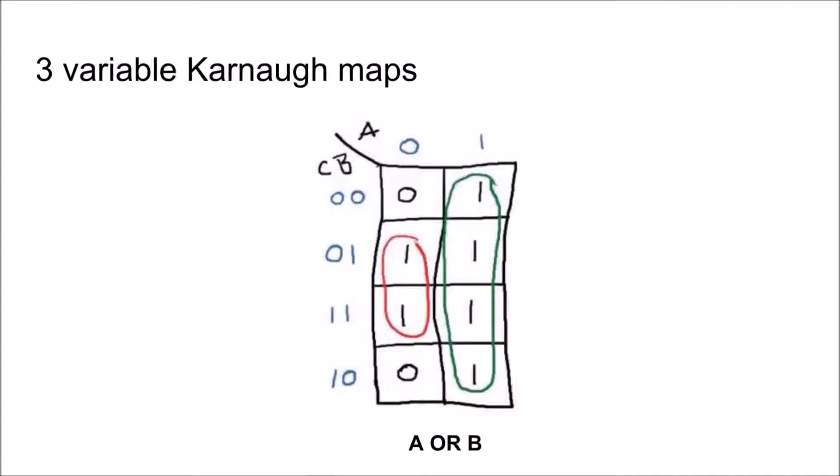Take this three variable Karnaugh map for example, representing the function a or b. The reason for this is that a will output a 1 in every square that corresponds with the a input of 1, and b will output a 1 in every square that corresponds with the b input of 1.